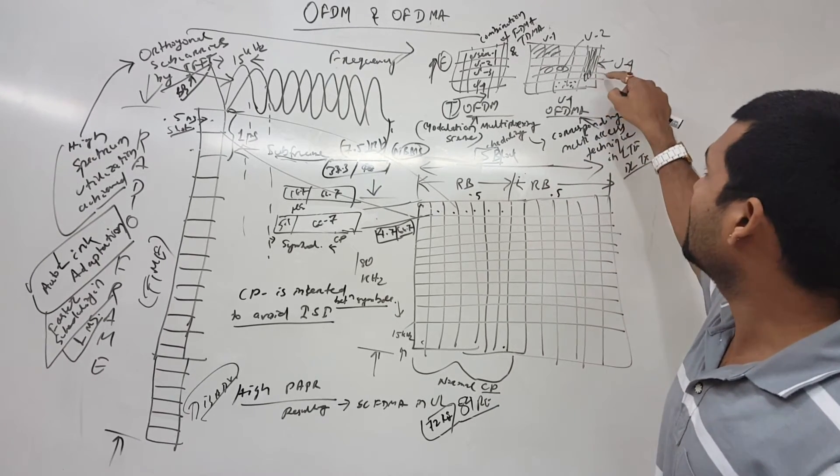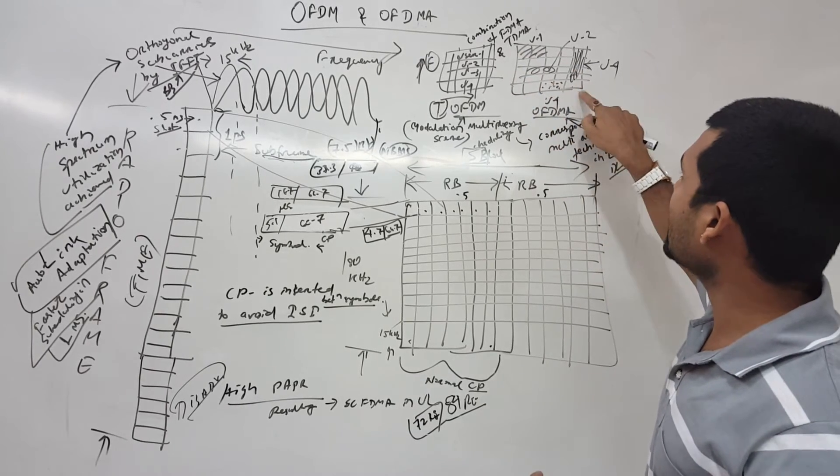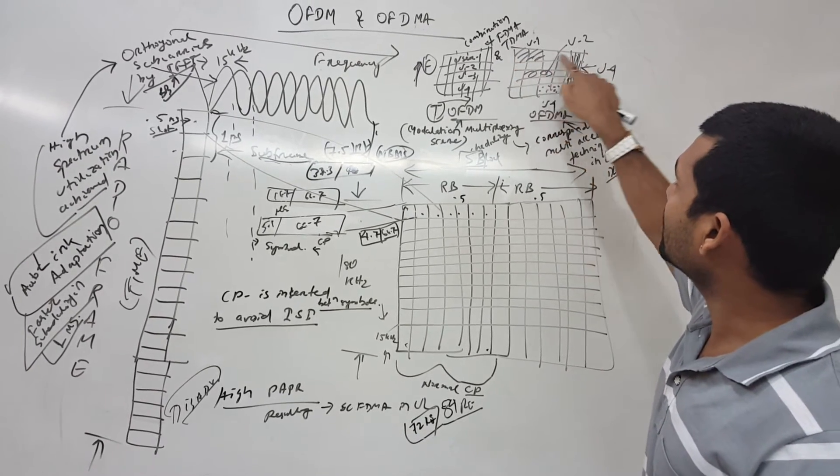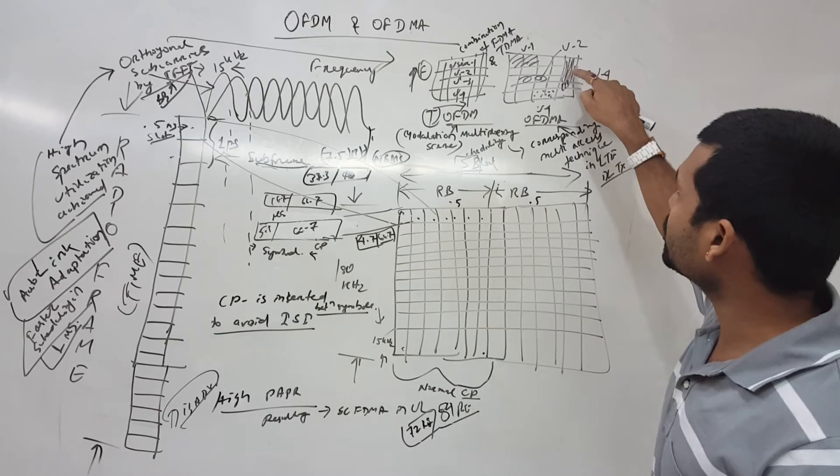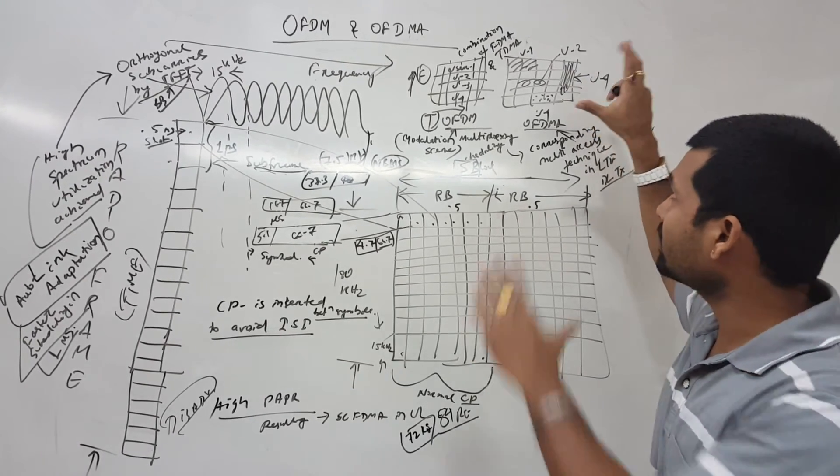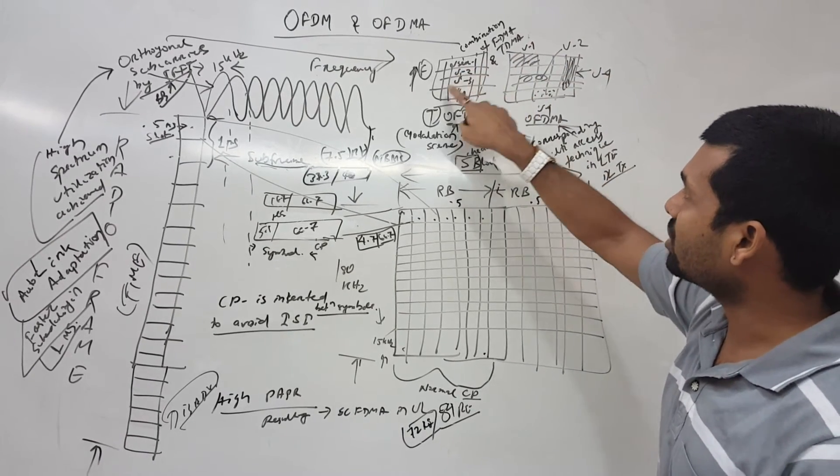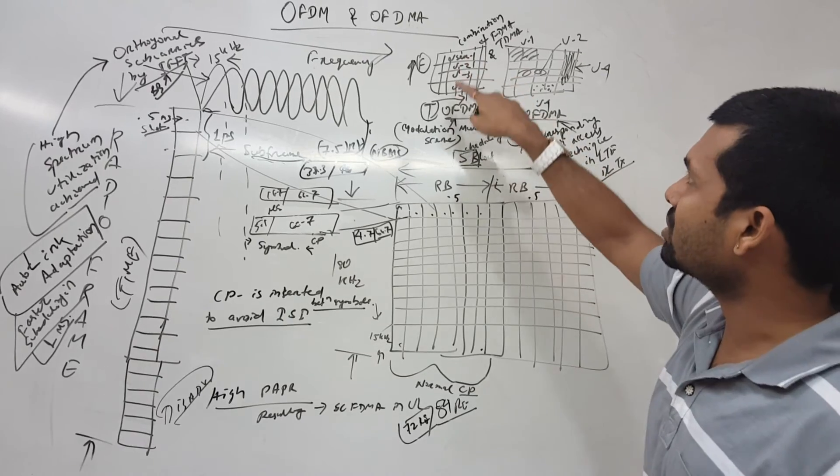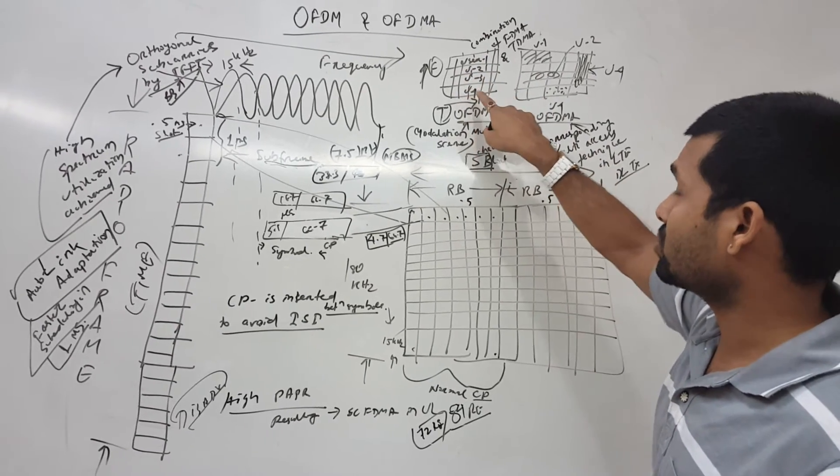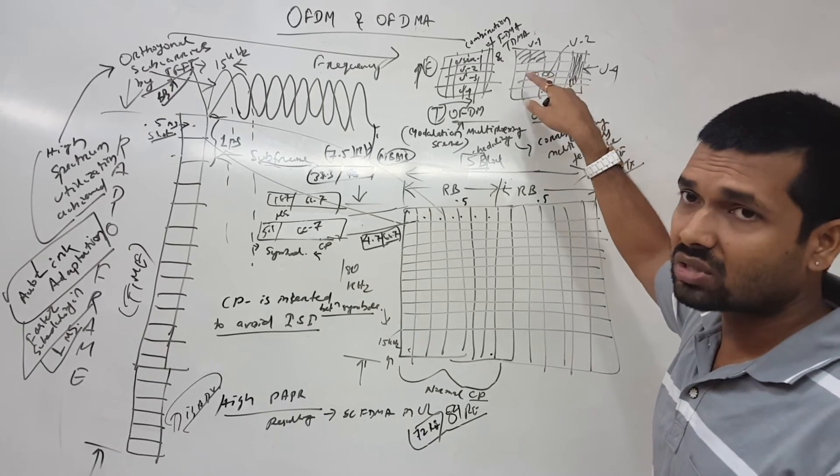I have drawn it - let's say this is the frequency, this is the time domain. In frequency domain, this 1, 2, 3, 4 I have scheduled for user 4 from the bandwidth. This 2 I have scheduled for user 1. Here it's an orderly fashion - user 1, user 2, user 3, user 4. Here I can use anywhere, I can schedule the users actually.